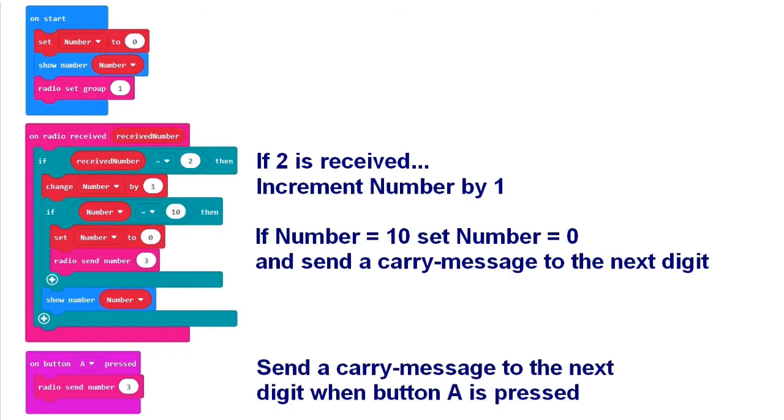If you make more than 9 errors, a carry is sent to the next microbit, which must be provided with this program. It is actually intended to pass on a carry to a third digit if we would reach over 99, but we do not need that here.